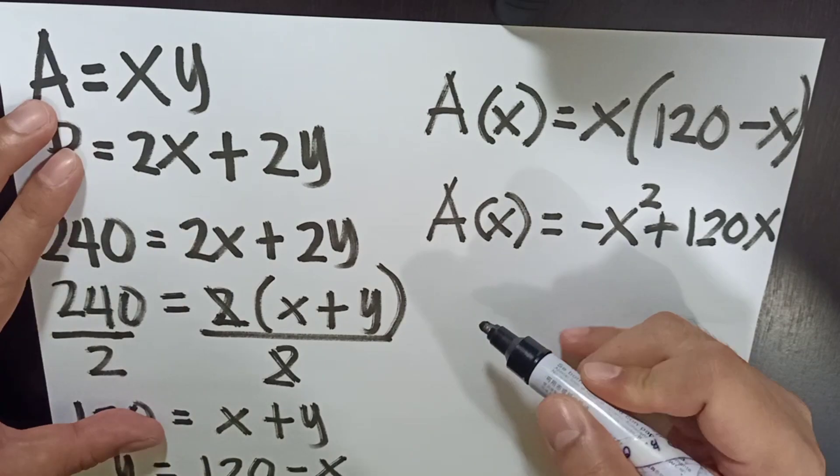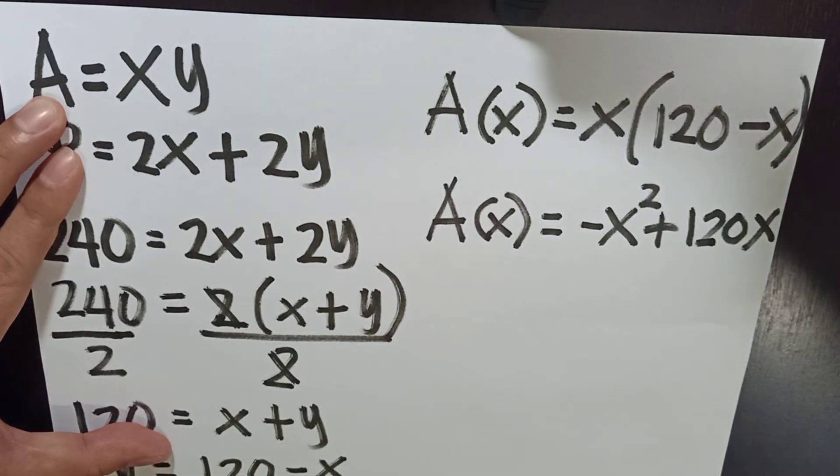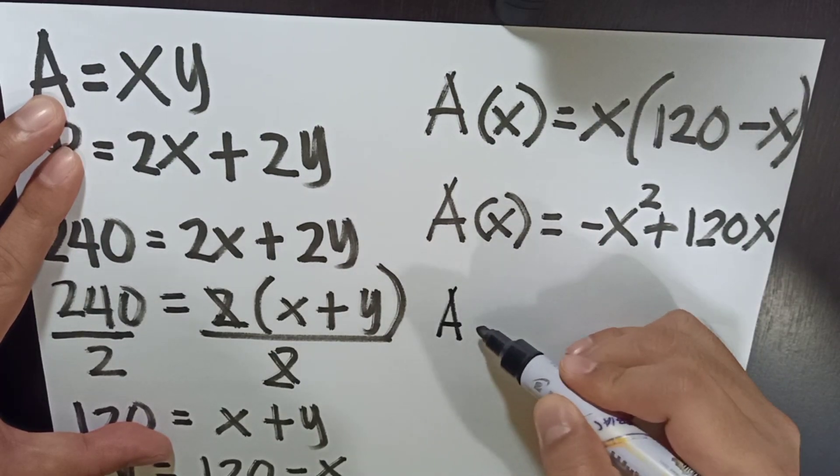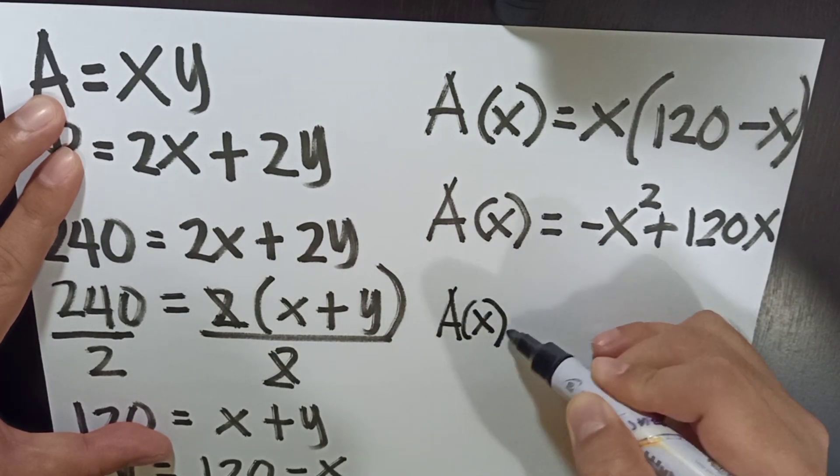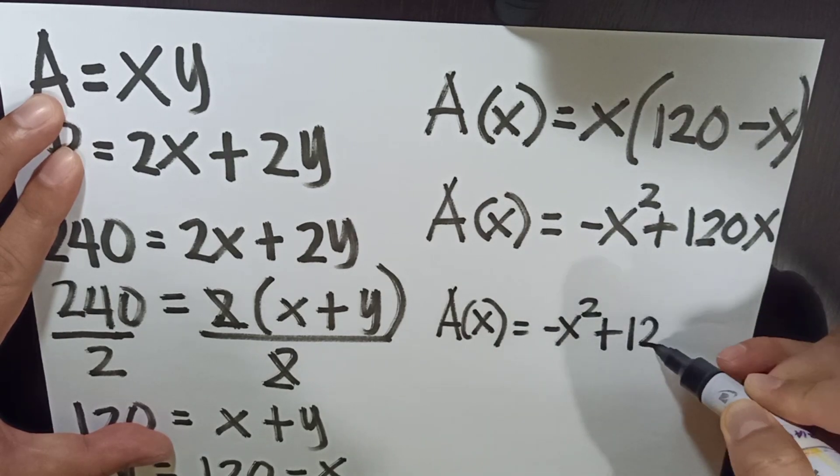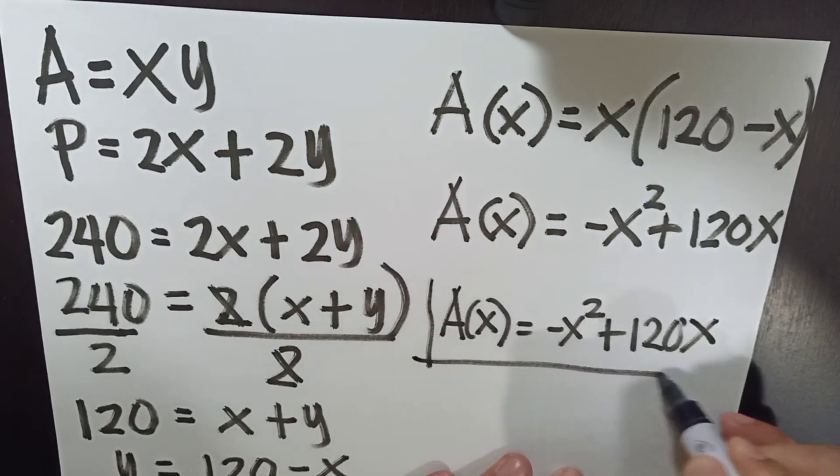Therefore, the function now, if we are going to get the final answer, this will be A, area as a function of x, is negative x squared plus 120x. This is now our function.